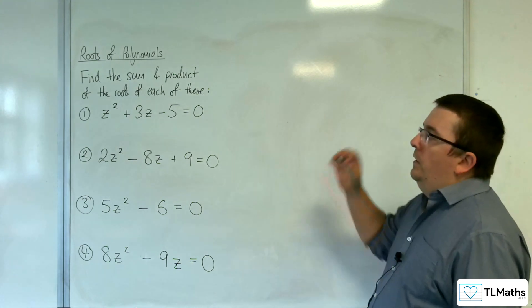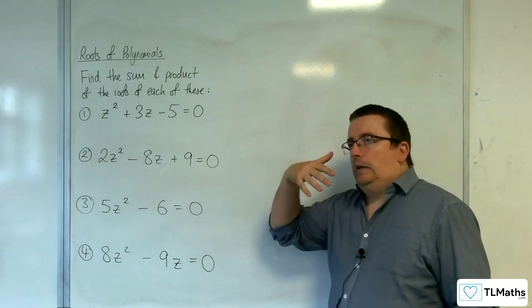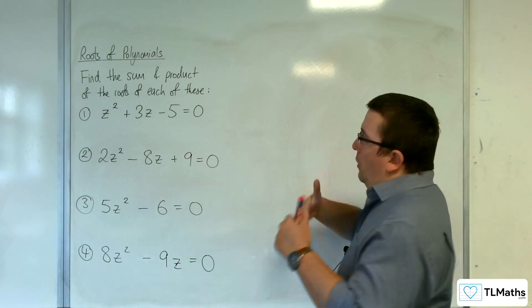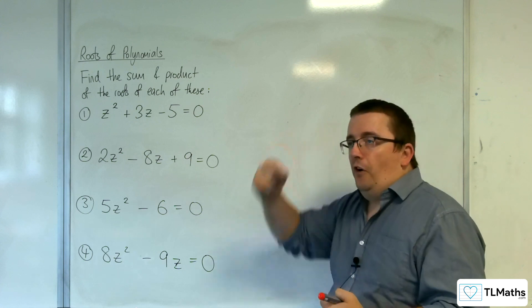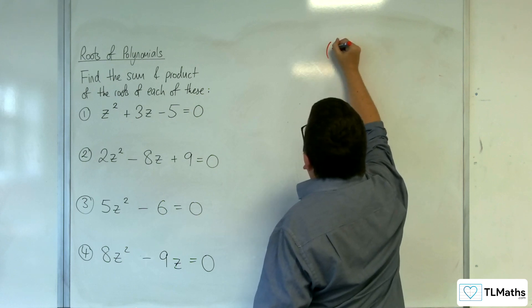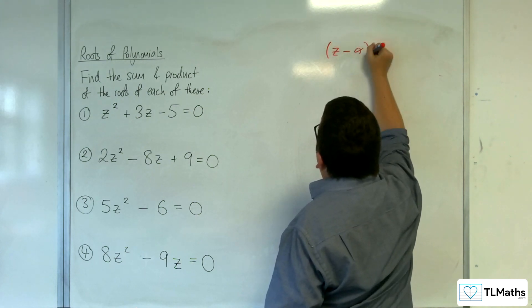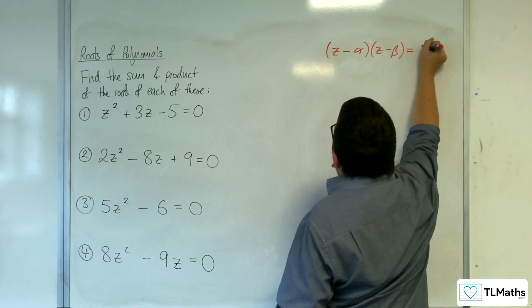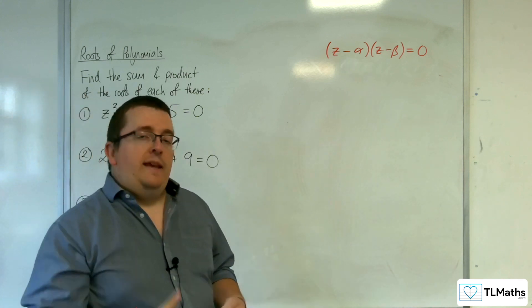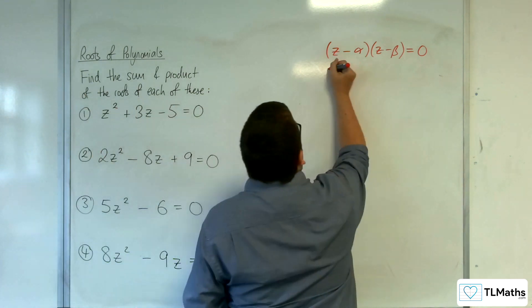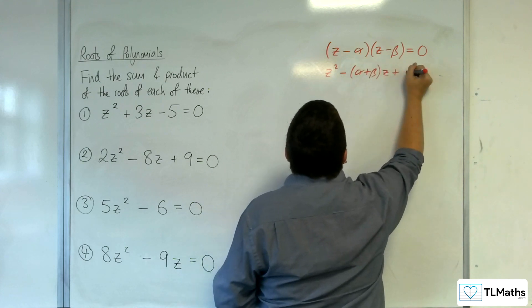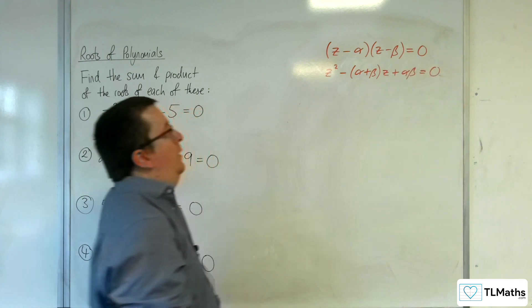If you think back to the previous video, if you've got your quadratic equation and you divide through by the a first, you could then get it into a factorized form. If you know your alpha and beta are the roots, you'd be able to get it into that form. So I've divided through by the a and I can just factorize it to that. If I expand this, I get z squared take away alpha plus beta z plus alpha beta equals zero. This is what we saw last time.